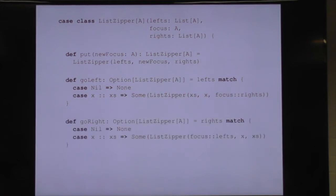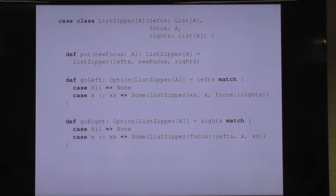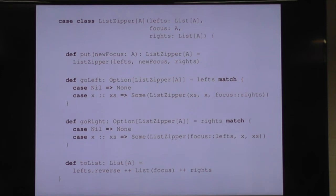Moving right looks very similar — we pattern match on the things to the right of us. If there isn't anything to the right, we fall off the edge. If there are things to the right, the new focus is the head of that list, the new things to the right are the tail, and we cons the focus onto the left. In both cases we're consing the focus, which is why the list to the left ends up in reverse order. We can turn a list zipper back into a list by reversing the things to the left, appending the singleton focus, and appending the list of things to the right.